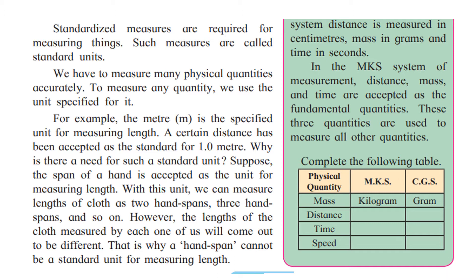Since we measured with parts of our body — like the length of the hand span — there will be differences and arguments. Everyone's measures will not be the same. Therefore it is very important to have standardized measures, meaning measures that will be the same for everybody. The unit in which we measure is called a standard unit. Examples include kilograms, meters, centimeters, time, and temperature.